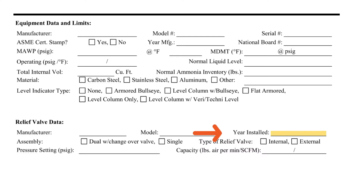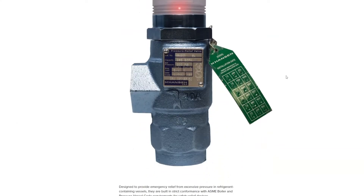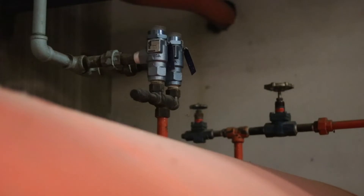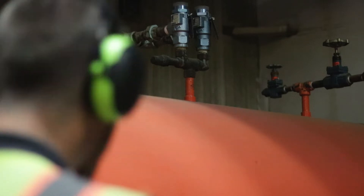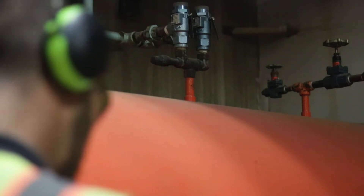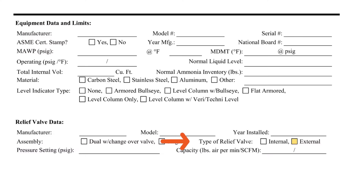The year installed can be determined by inspecting the installation date tag attached to the relief valve. In this example, the vessel is protected by a dual relief valve assembly consisting of two relief valves and a three-way relief isolation valve. The relief valves are external to the equipment and terminate to the atmosphere, so this configuration is categorized as external.